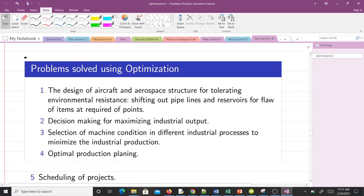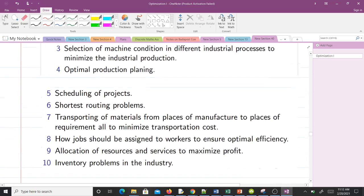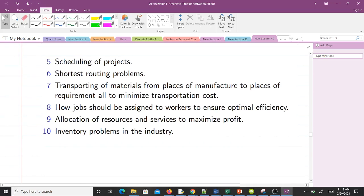Now let's look at some of the problems that we solve using optimization: the design of aircraft and aerospace structures for tolerating environmental resistance, decision making for maximizing industrial output, optimal production planning, scheduling of projects, shortest routing problems, reliability problems in industry. You can go through the rest.